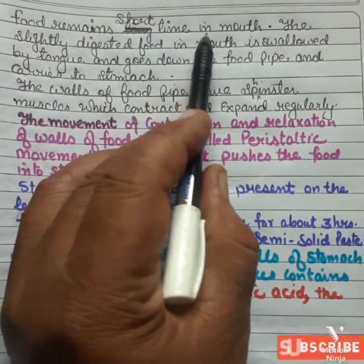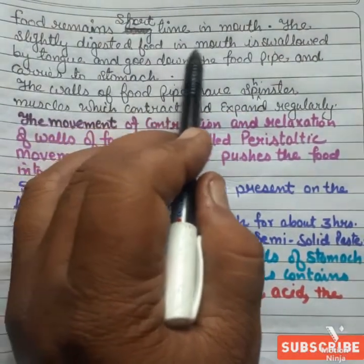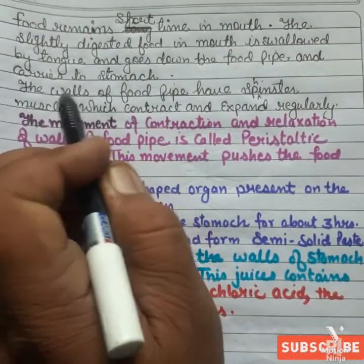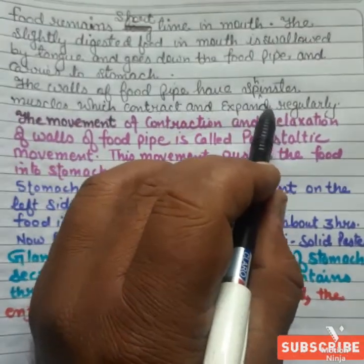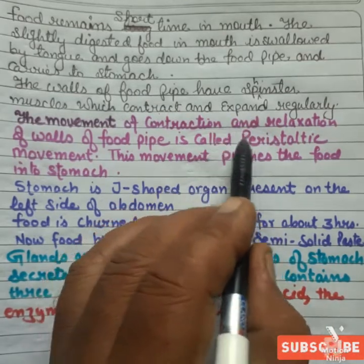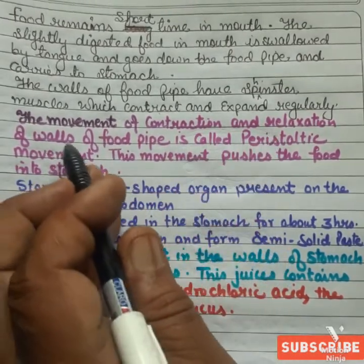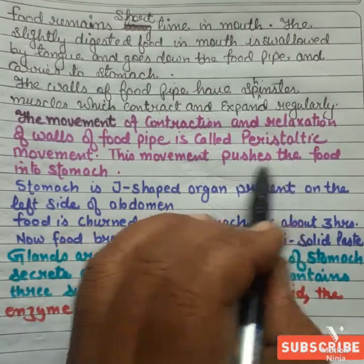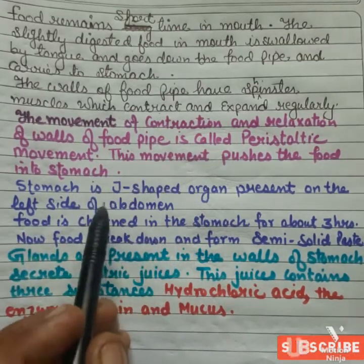Food remains only a short time in the mouth. The slightly digested food is swallowed by the tongue and goes down the food pipe, carrying it to the stomach. The walls of the food pipe have sphincter muscles which contract and relax regularly. This movement of contracting and relaxing is called peristaltic movement, and it pushes the food down into the stomach.